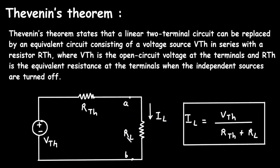IL is the load current and RL is the load resistor. These are the two terminals: terminal A and terminal B. If we want to find the load current IL, we use the formula: IL = VTH divided by (RTH plus RL).